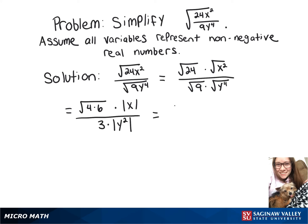Now the square root of 4 is 2, so we've got 2 times root 6 times the absolute value of x over 3 times the absolute value of y squared. And now since we know that we have non-negative real numbers, our simplified answer is 2 root 6x over 3y squared.